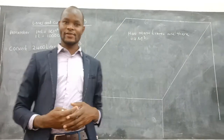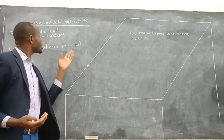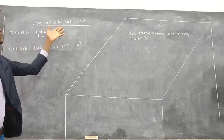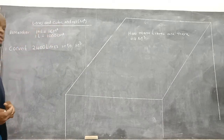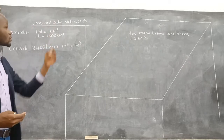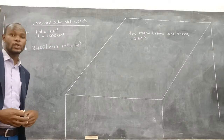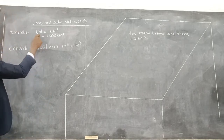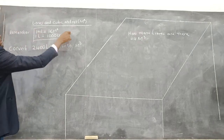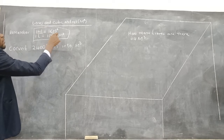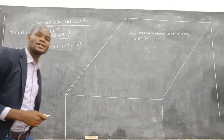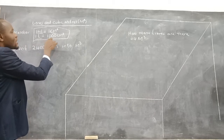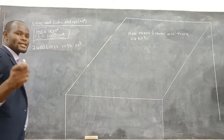Hello my friend, welcome to this lesson where I am going to guide you on how to convert meters cubed to liters and vice versa, meaning liters to meters cubed. I know you are aware of these conversions: 1 milliliter is equivalent to 1 cm cubed, and also 1 liter is equivalent to 1000 cm cubed.